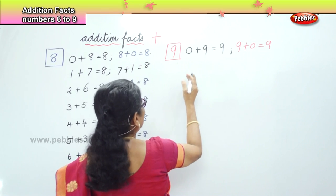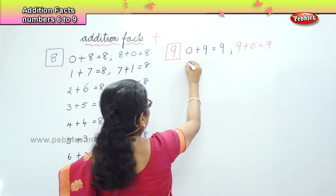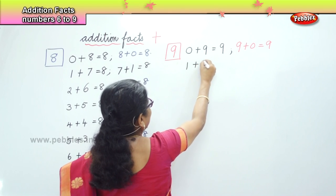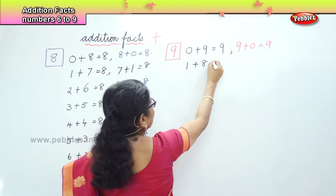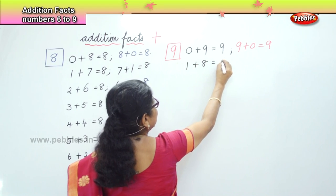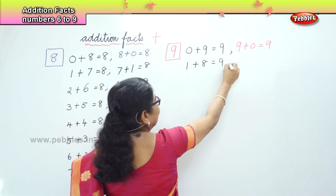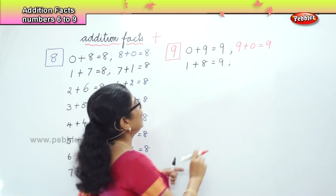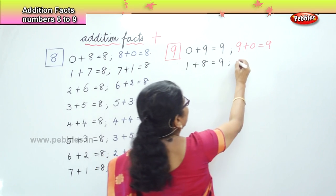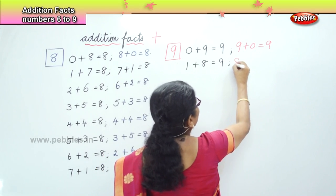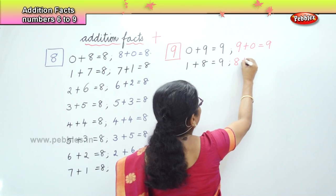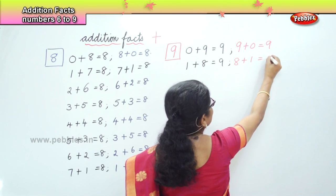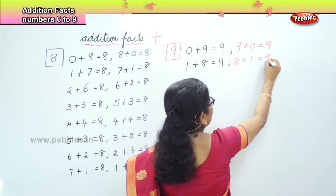Next: 1 plus 8 is equal to 9. And the reverse: 8 plus 1 is equal to 9.